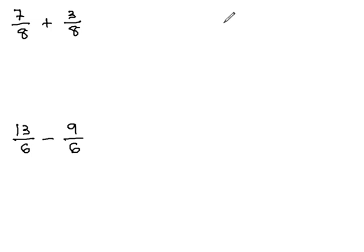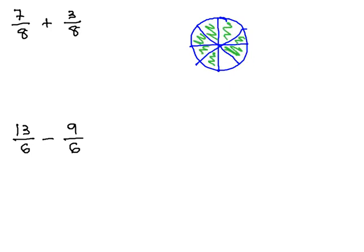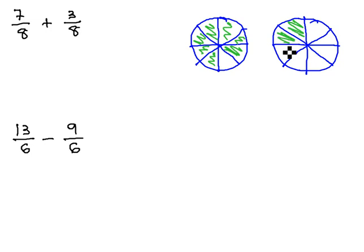You could think about this as having one pie with 7 eighths of it left: 1, 2, 3, 4, 5, 6, 7 eighths, and having another pie sliced the exact same way, but this time with 3 eighths left: 1, 2, 3.